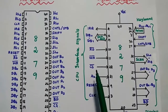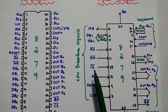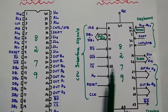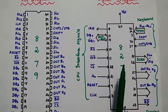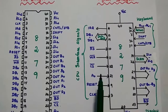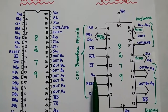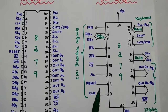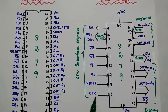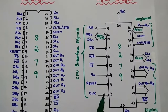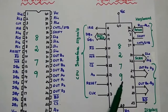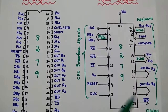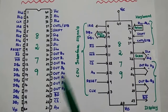Next is chip select — this signal is mainly used to enable the 8279. If it is low, then only it can be enabled. Next, A0 is the address line from the CPU. Reset is used to reset this interface. The clock signal is required to operate the 8279. VCC is the power supply signal and there is also the ground signal.